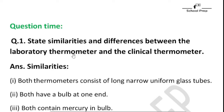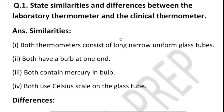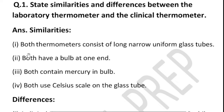The first question is: state similarities and differences between the laboratory thermometer and the clinical thermometer. Similarities: both thermometers consist of a long, narrow, uniform glass tube. Both have a bulb at one end, and both contain mercury in the bulb.